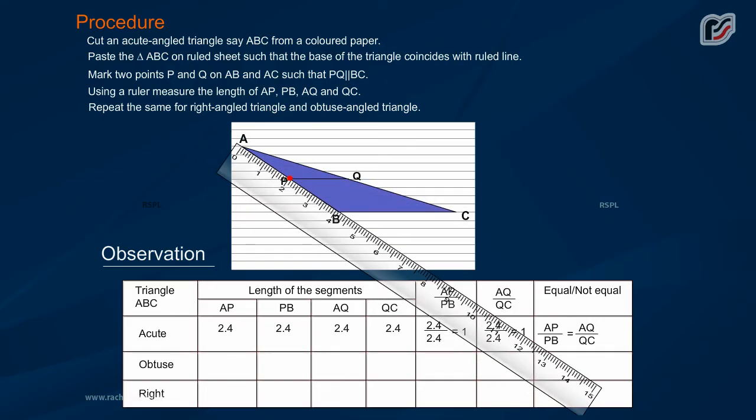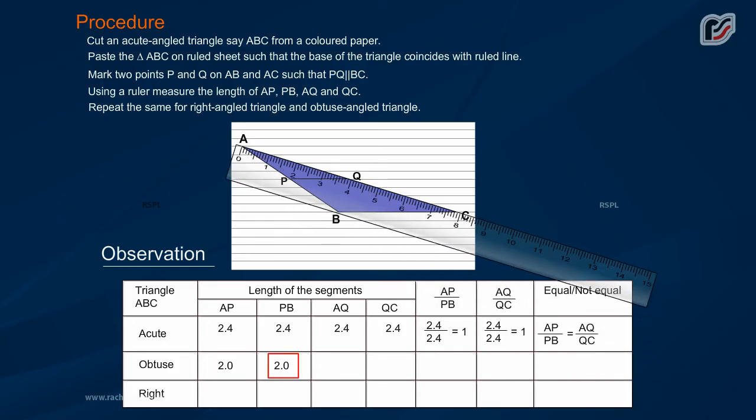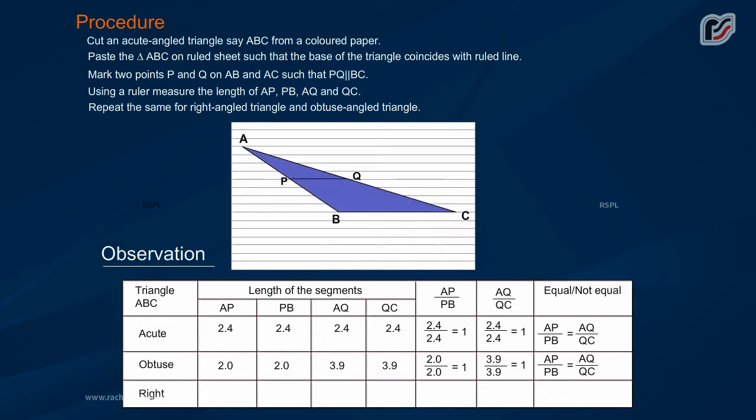For obtuse: length is 2.0, 2.0, 3.9, 3.9. 2.0 by 2.0 is equal to 1. 3.9 by 3.9 is equal to 1. AP by PB is equal to AQ by QC.